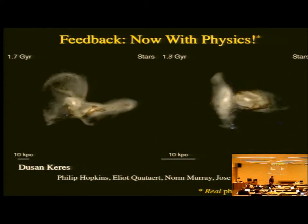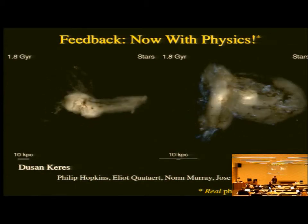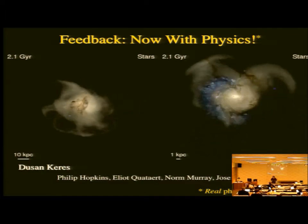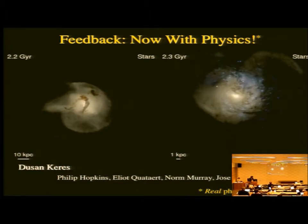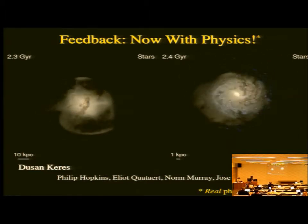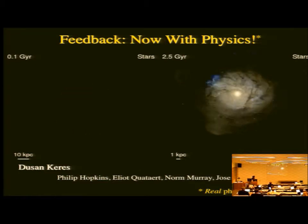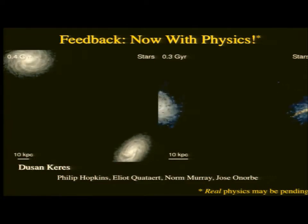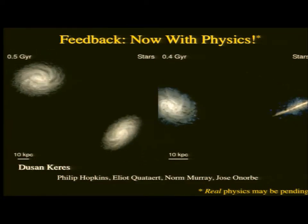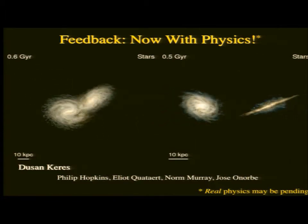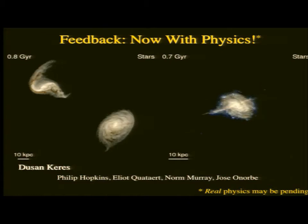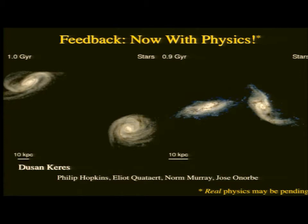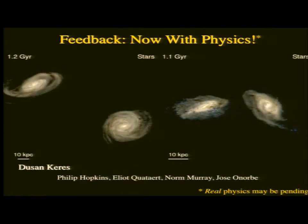Dushan was supposed to give this talk and he apologizes to everybody here for not being able to make it, but I'll be giving it on his behalf. It's on work that he and I have been collaborating on closely, also with Elliot Quadrant and Norm Murray, trying to put more realistic feedback physics into the simulations and make progress starting from small scales and going up to inform the kinds of models we've all been talking about. This is also very much related to work by Jose Onyorbe that James Bullock also mentioned during his talk.